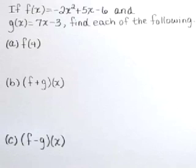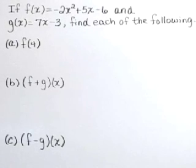If f of x is equal to negative 2x squared plus 5x minus 6, and g of x is equal to 7x minus 3, find each of the following.